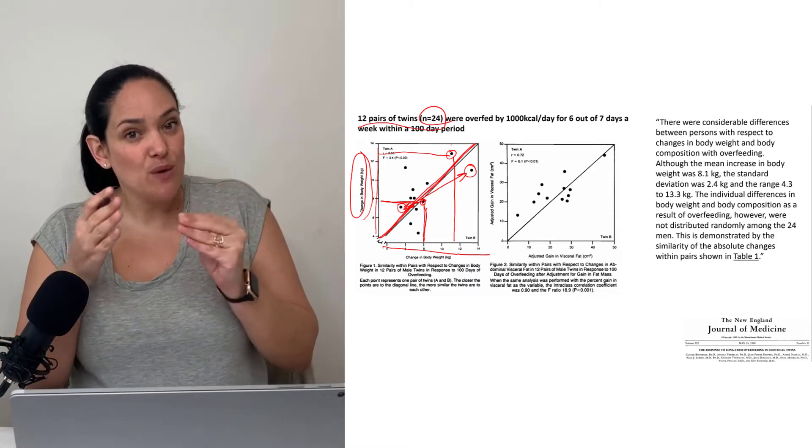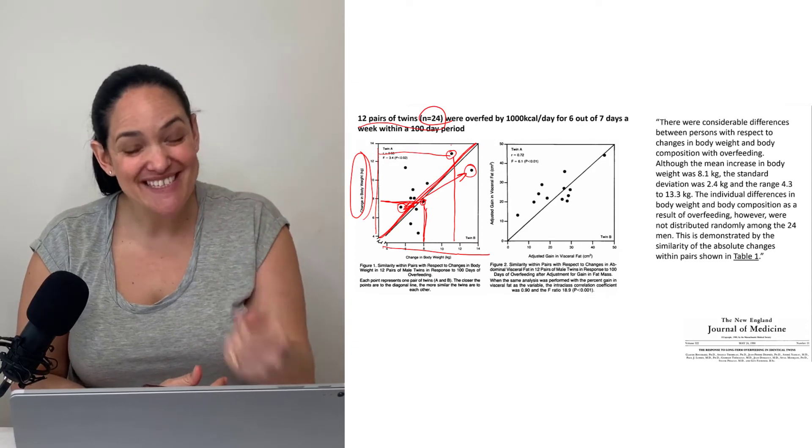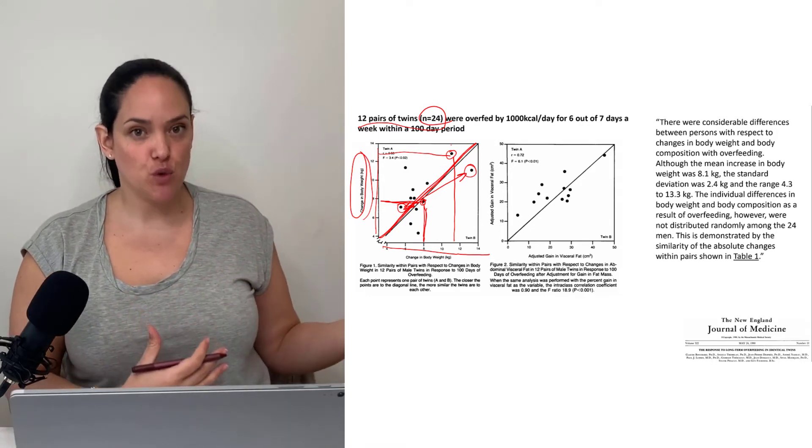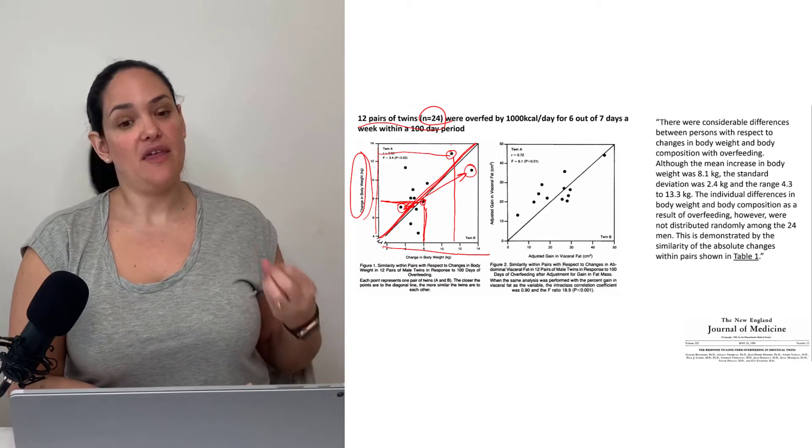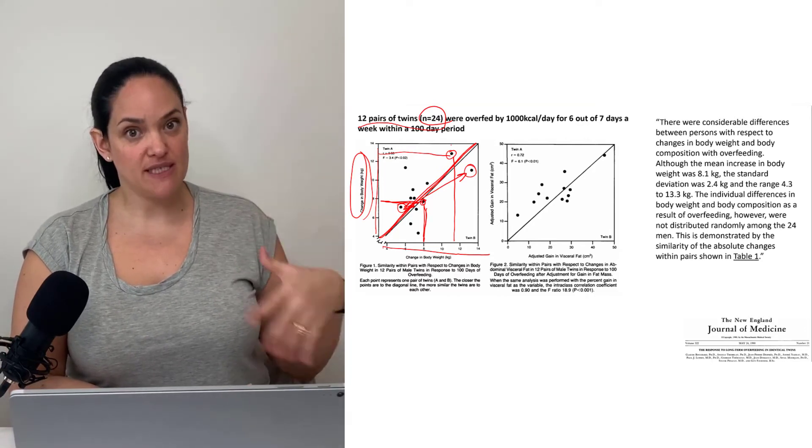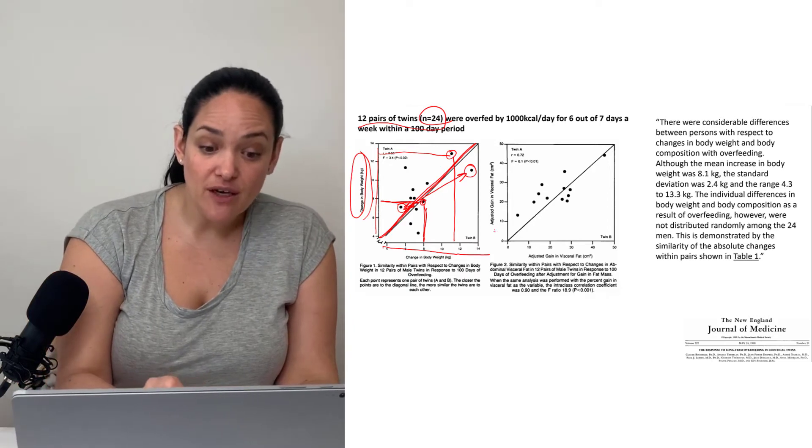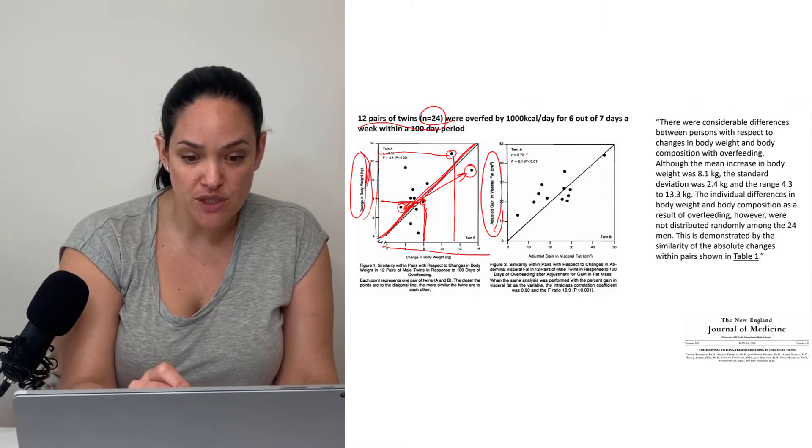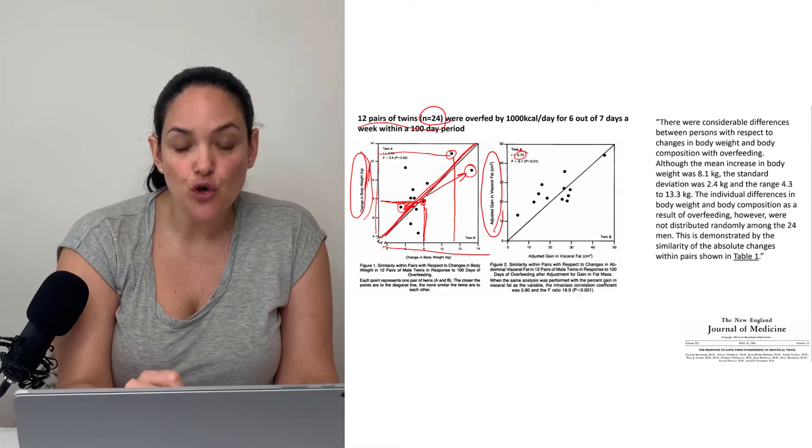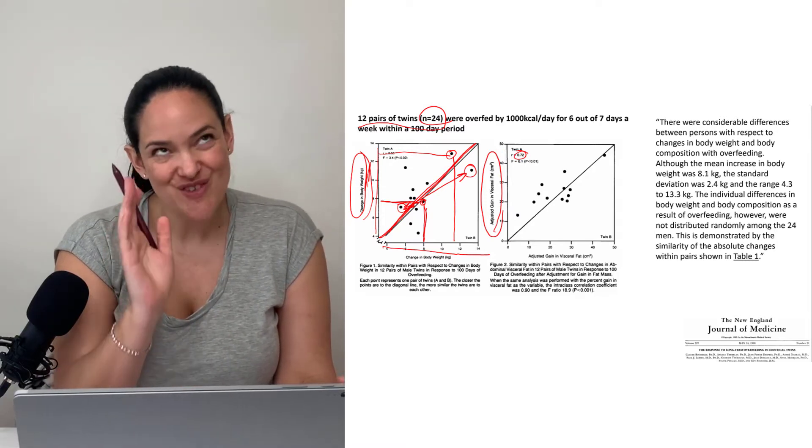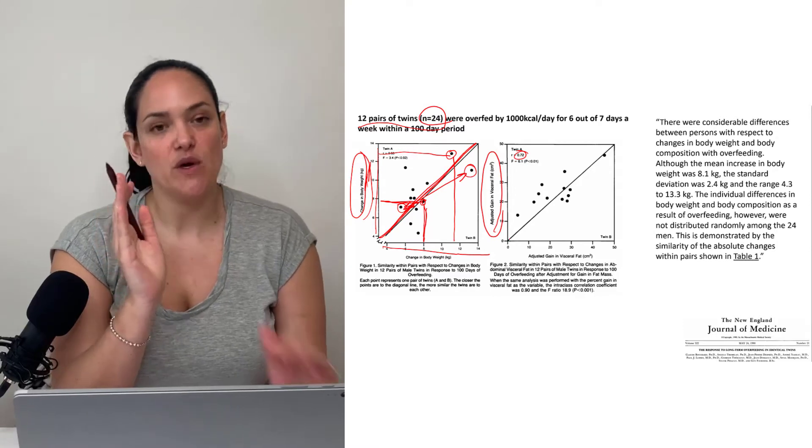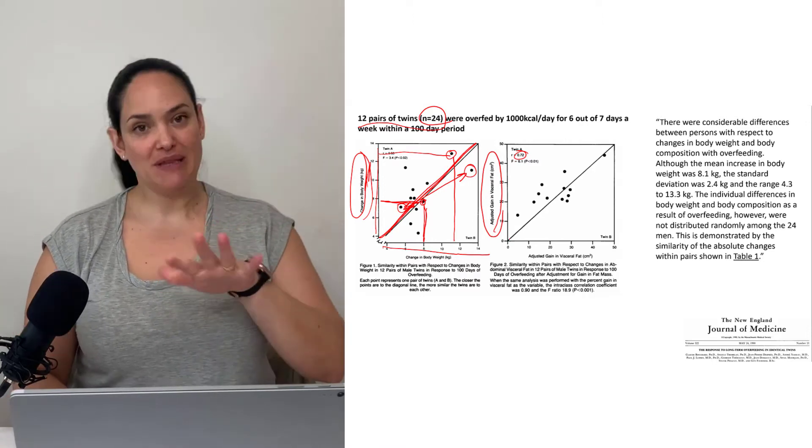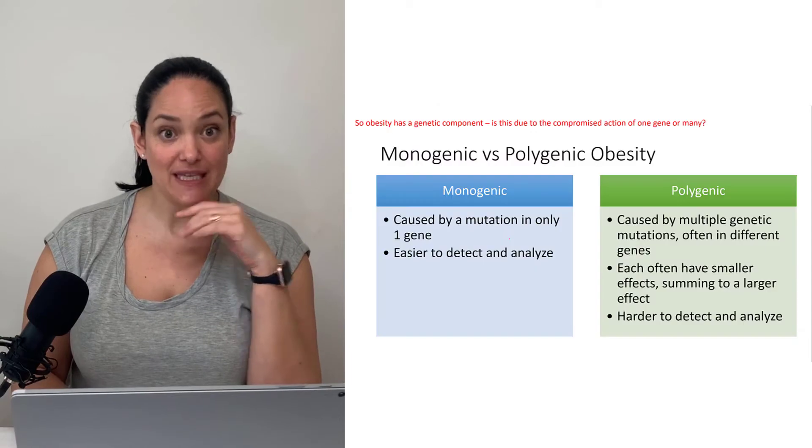If we look at how much visceral fat they gained as opposed to just total weight, the correlation coefficient goes up even further. We have a stronger correlation between the visceral fat mass gain of one twin versus the other, again showing that genetic factors are playing some role in the gain of fat mass and our likelihood to gain fat mass.